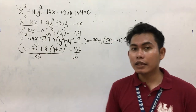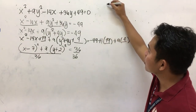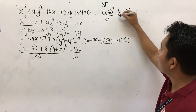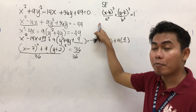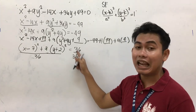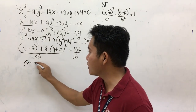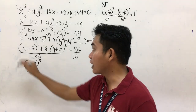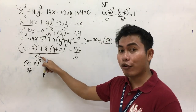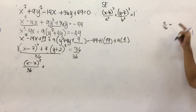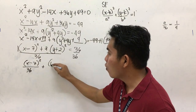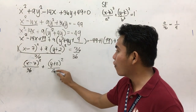Dividing both sides by 36, you get (x minus 7) squared over 36 plus 9 over 36 times (y plus 2) squared equal to 1. Simplify 9 over 36 to 1 over 4, giving (x minus 7) squared over 36 plus (y plus 2) squared over 4 equals 1. This is now the standard equation of the ellipse. Our center — equating to 0 — is (7, negative 2).